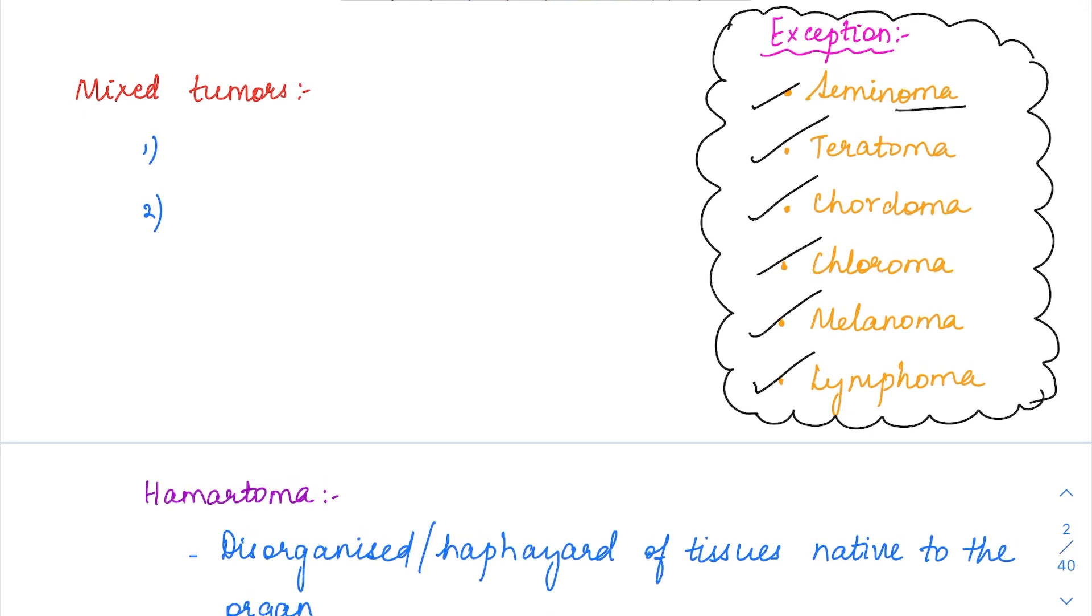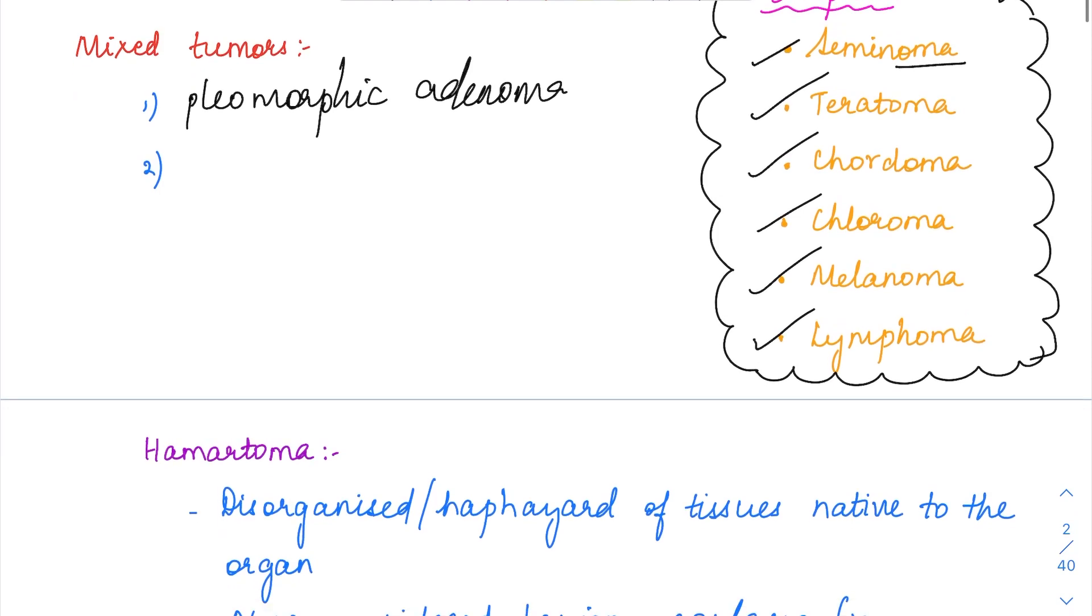Then there are certain tumors like mixed tumors. Mixed in the sense they are going to have both epithelial and mesenchymal components. The best example would be pleomorphic adenoma. In pleomorphic adenoma, it is a salivary gland tumor usually. In this you are going to have a very close admixture of both the epithelial and the mesenchymal components.